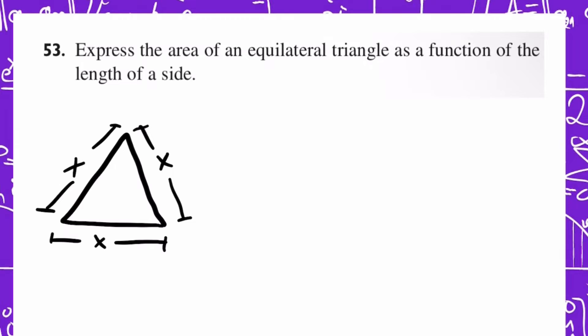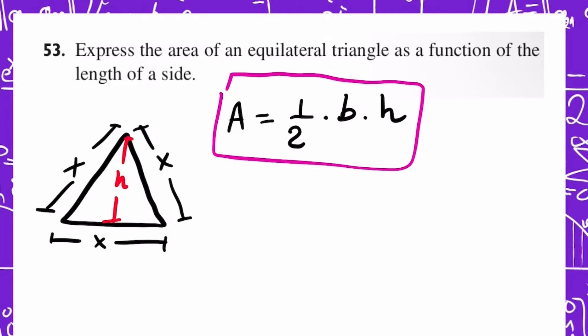We also need the height. I'm going to call it H. The formula of a triangle is area equals one half base times height. This is the formula, and we need to express it as a function of one length, which I'm going to call it X. But first, we need to know what is the value of H.